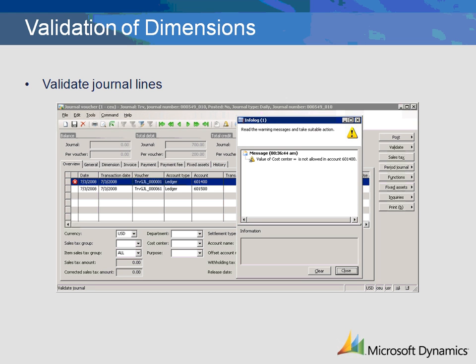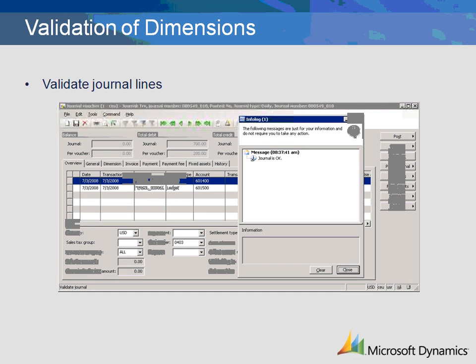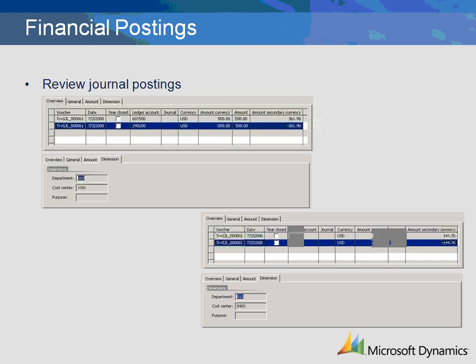Let's fill in some dimension values and revalidate. The journal is okay, so let's post the journal and then view the results. We will look at the voucher inquiry for each line. Here we see the debit to account 601500 and credit to the offset account. On the dimension tab, we see the dimensions that were used when posting.